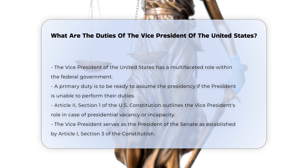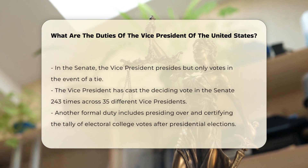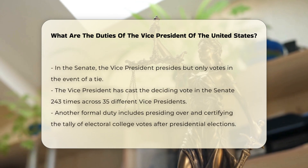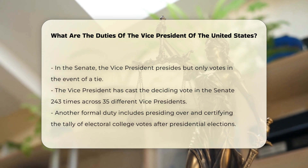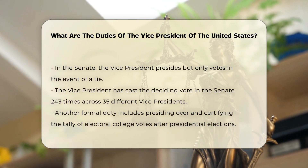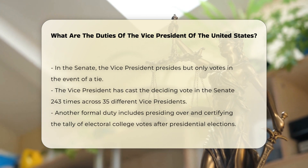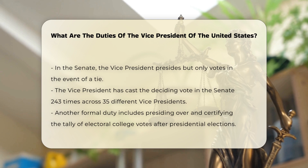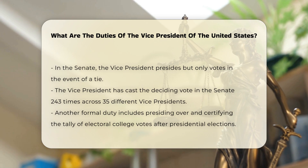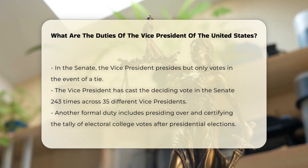The Vice President also serves as the President of the Senate, a role established by Article 1, Section 3 of the Constitution. In this capacity, the Vice President presides over the Senate but does not have a vote unless there is a tie. In the event of a tie in the Senate, the Vice President has the authority to cast the deciding vote. This has occurred 243 times and involved 35 different Vice Presidents.